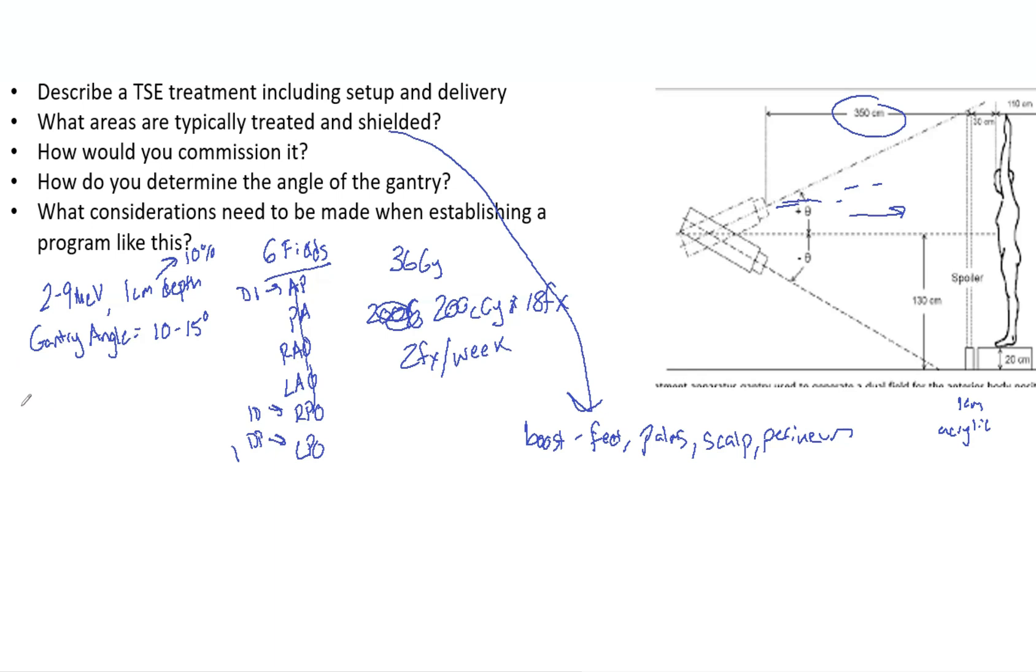Actually, one thing I didn't mention—I broke my own rule—TG-30. I can't believe I didn't mention it. When there's a task group, you always mention it. TG-30 is the task group for Total Skin Electrons. Now, if we want to talk about